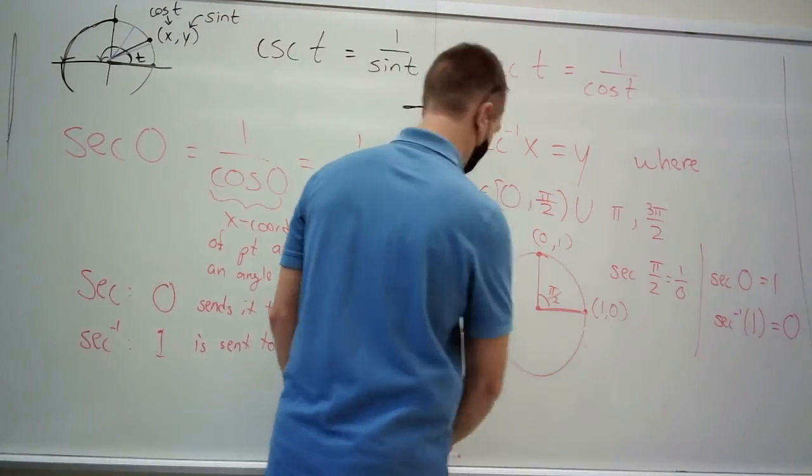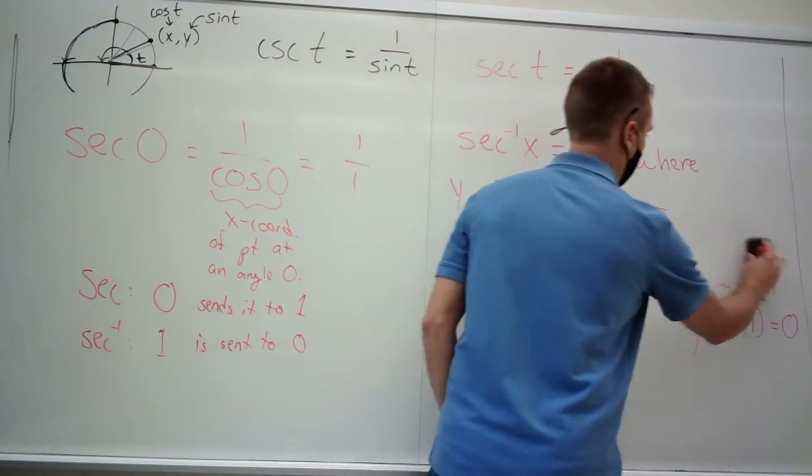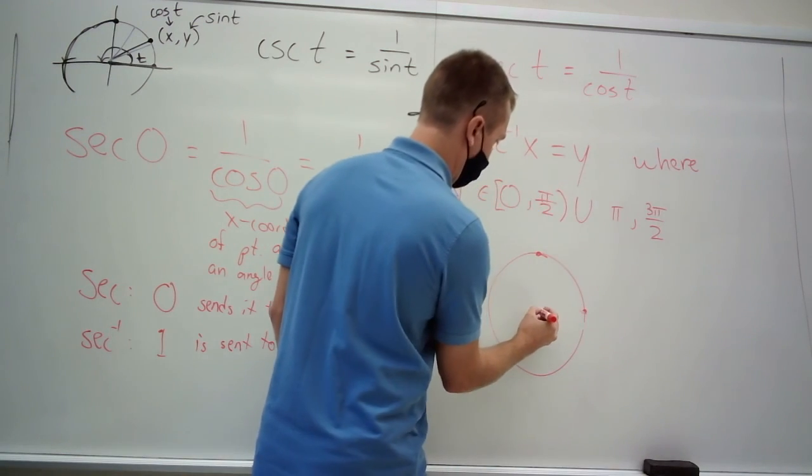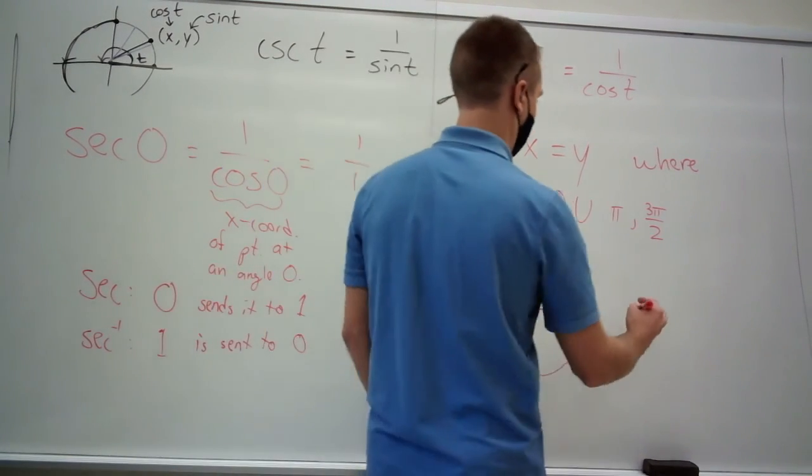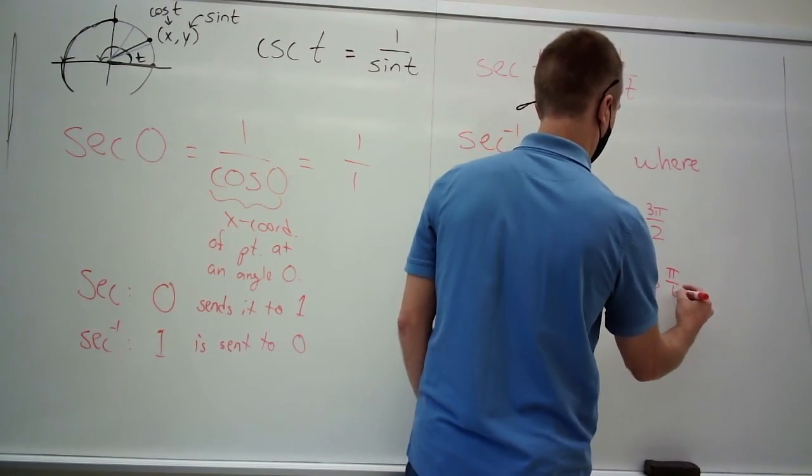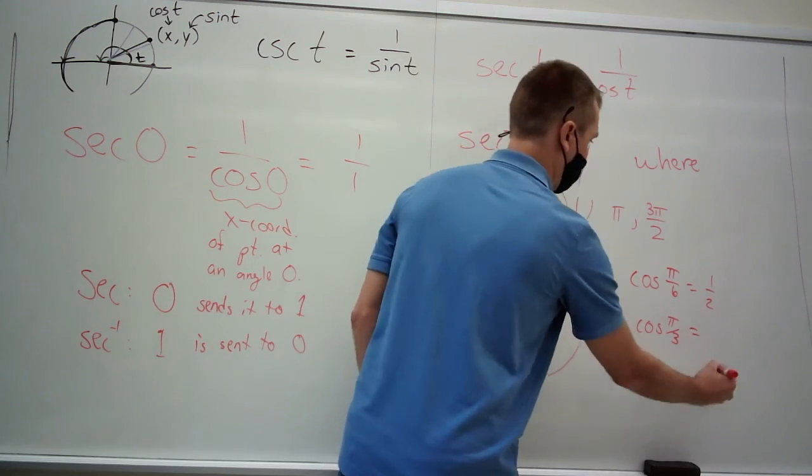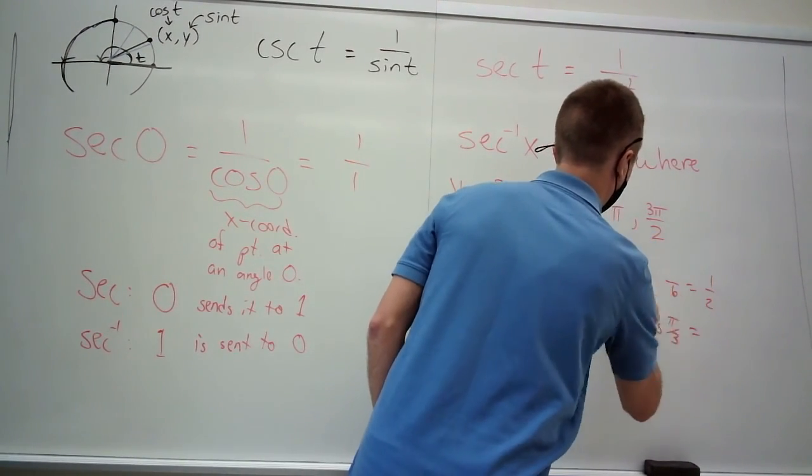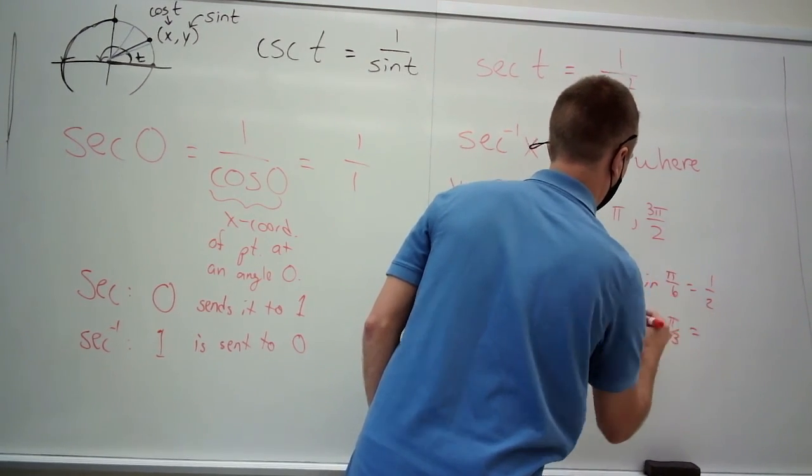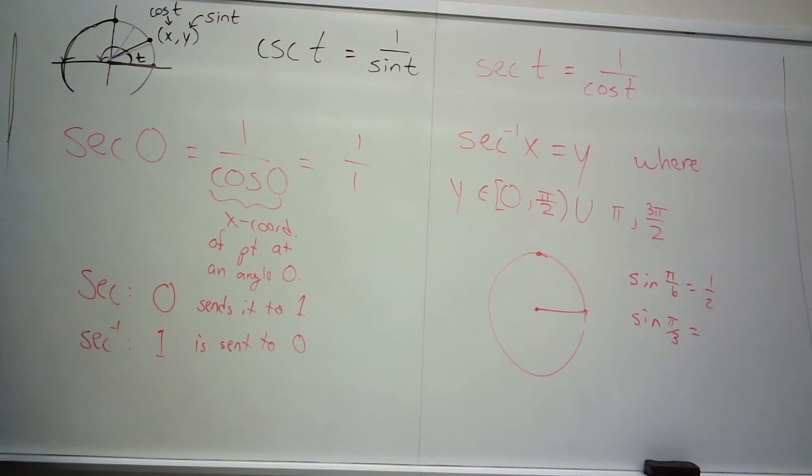Maybe we can fill in the blanks here. How are we with just knowing values of trig functions? That's not something I ever really asked. If I asked you what's this, how many of you right now could tell me that? Cosine of 5π over 6 is not that. Sine of that is that. How many of you could tell me that? It's okay.